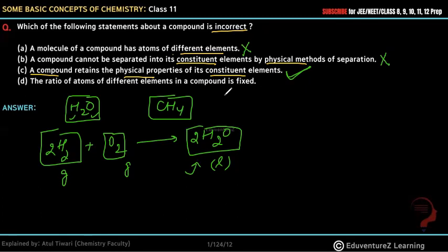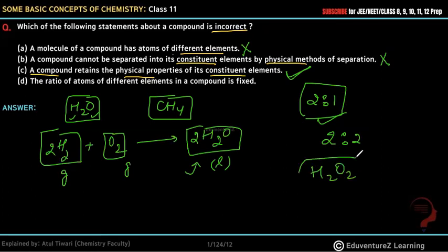The ratio of atoms of different elements in a compound is fixed. For example, in water, the ratio of hydrogen to oxygen atoms is 2 to 1. This is a fixed ratio. If the ratio changes to 2 to 2, like H2O2, this is a different compound - not water. So the ratio must be fixed. This statement is correct.